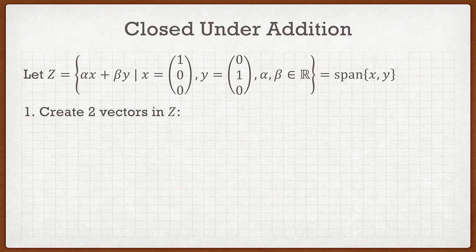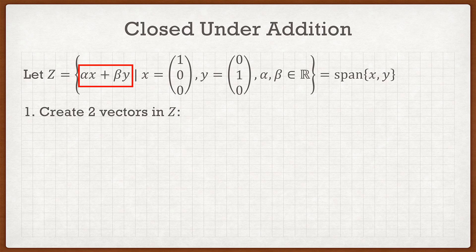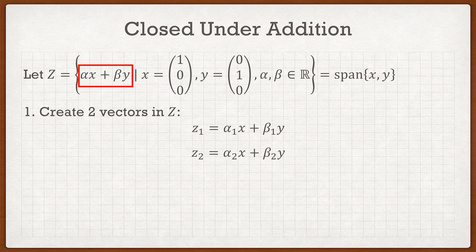So when we're doing the check for closed under addition, what we want to do is create two vectors. Because the way to prove it is to add two of the vectors and just ensure that it is closed under addition. So when I say create two vectors, I mean we're going to have to look at this part of the function right here, which is αx plus βy. So from this I can say okay, well I have two vectors which I called z₁ and z₂, and they're equal to α₁x plus β₁y, and then the second one z₂ is equal to α₂x plus β₂y.